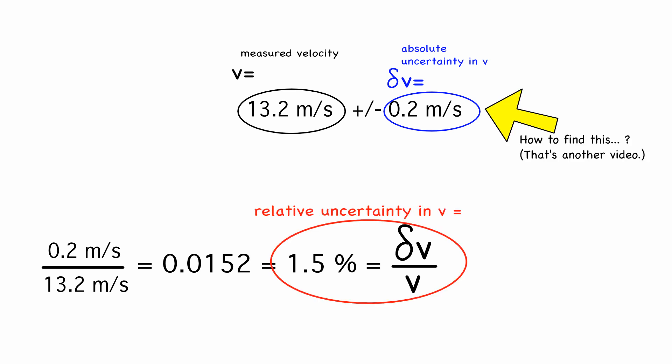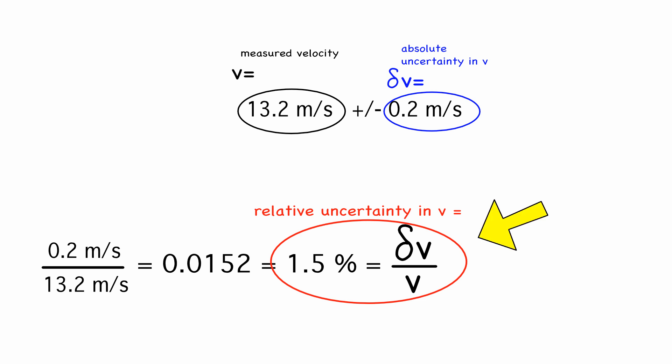Delta-something is an absolute uncertainty — it has units. The relative uncertainty is a fraction or a percentage, and it is unitless.